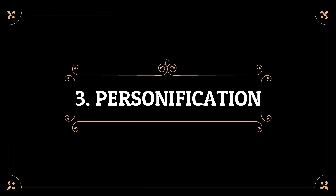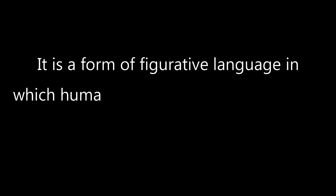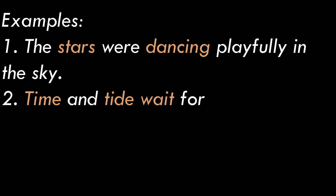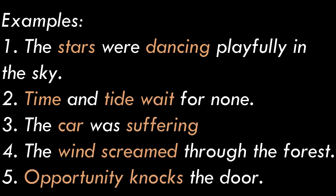The third type is called personification. It is when human characteristics are attributed to an inanimate object — human qualities are given to non-living objects. A few examples: 'The stars were dancing playfully in the sky.' 'Time and tide wait for none.' 'The car was suffering.' 'The wind screamed through the forest.' 'Opportunity knocks the door.' So all the human qualities are given to a non-living thing, and such a type of figure of speech is called personification.